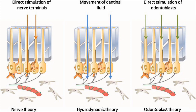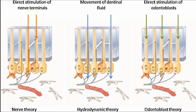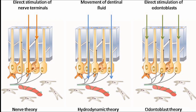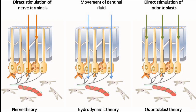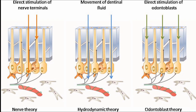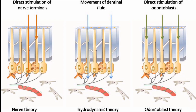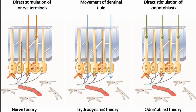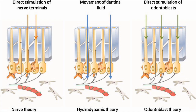The fibers present inside the pulp are the C fibers, while the nerve fibers near the border of the dentine and pulp are the A-delta fibers and the A-beta fibers. The A-delta fibers are predominantly found inside the tooth.